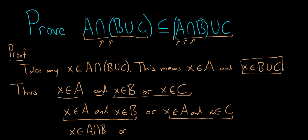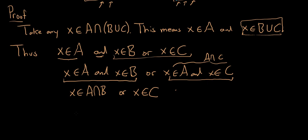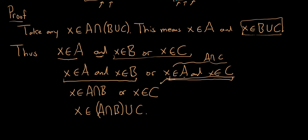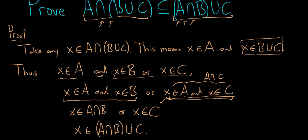Or, x is in A and x is in C, which means x is in A intersection C. We only need to show that x is in C, so we can drop the x is in A from that second part. If x is in A and x is in C, we only care about it being in C, so x is in C.